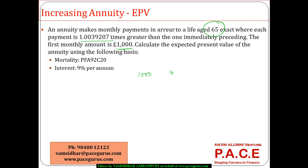What is the next payment? The next is 1000 times 1.0039207. The next to that is 1000 times 1.0039207 squared. So these are the payments that are coming up. And these are being paid only on condition that the life has survived until that period.